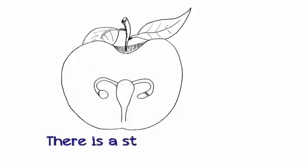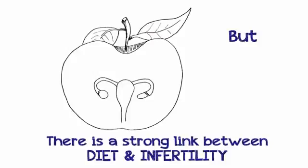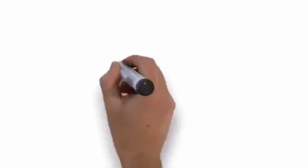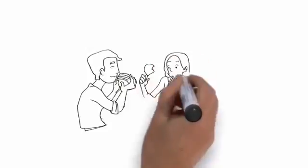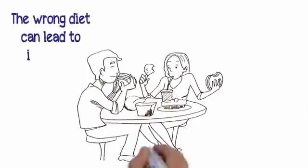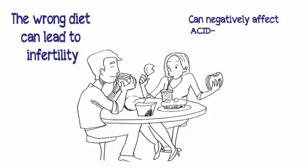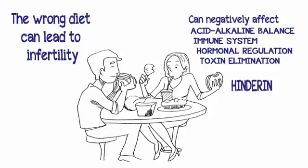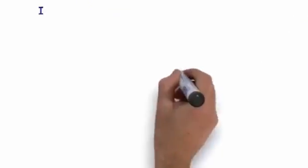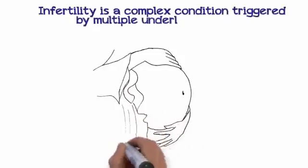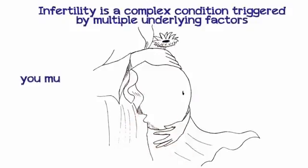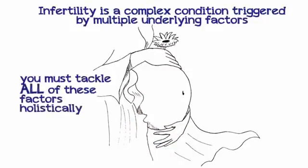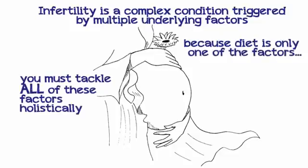Key number three: Despite what some doctors may say, there is a strong link between diet and infertility, but diet alone cannot cure infertility. Recent studies have found a strong connection between diet and infertility. The wrong diet can negatively affect your acid-alkaline balance, immune system, hormonal regulation, and toxin elimination. However, infertility is a complex condition triggered by multiple underlying factors, so no special diet alone will help you get pregnant.